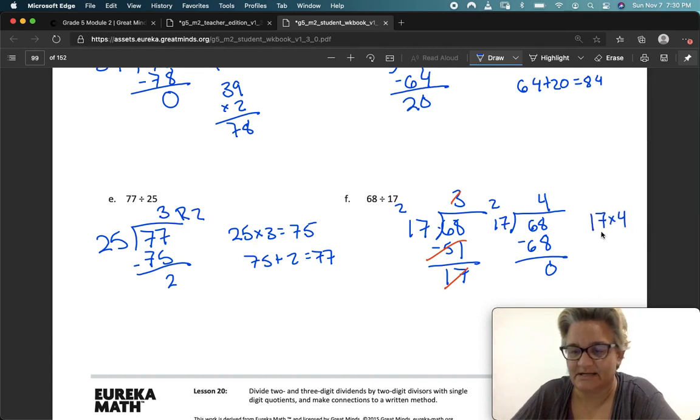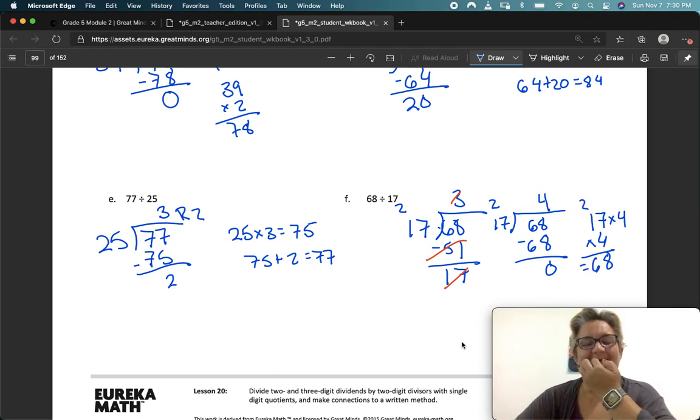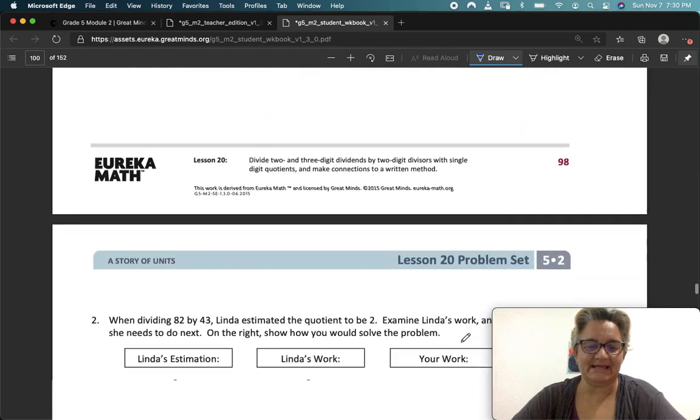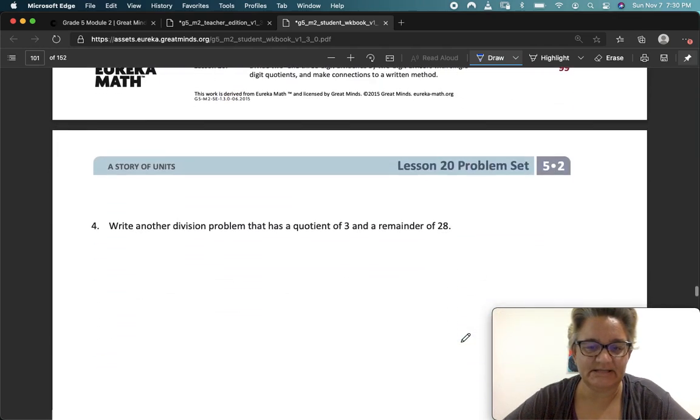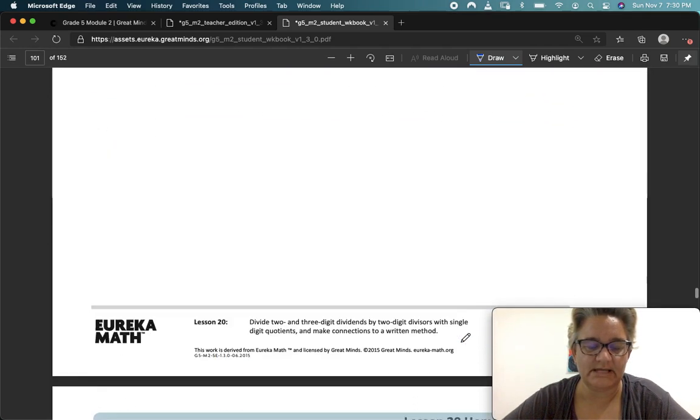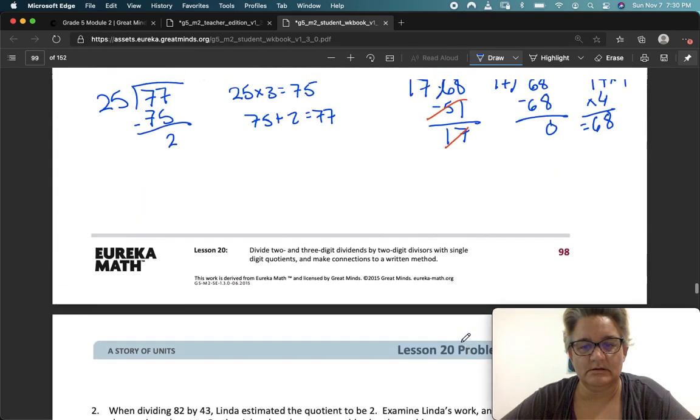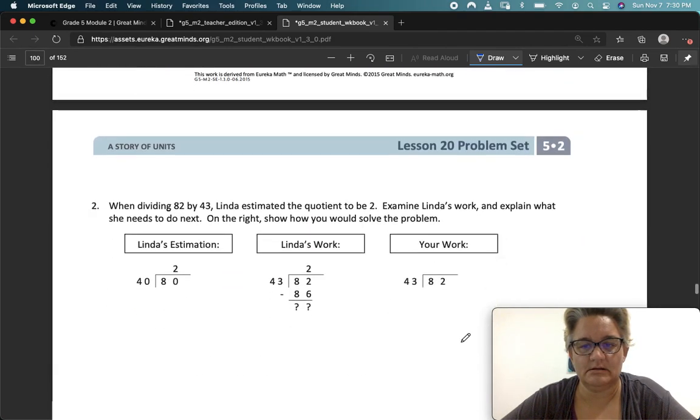So now let's check our work. 17 times 4 equals, well, let me put it here. 4 times 7 is 28. Carry the 2. 4, 5, 6. 68, all right. Next page. Do we just have two pages today? No, we've got three.